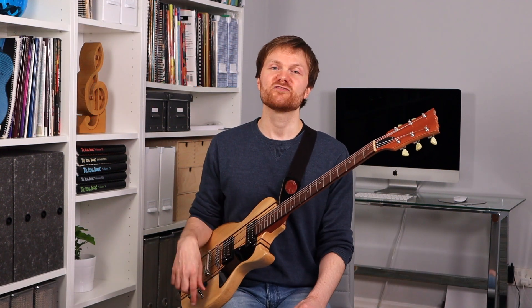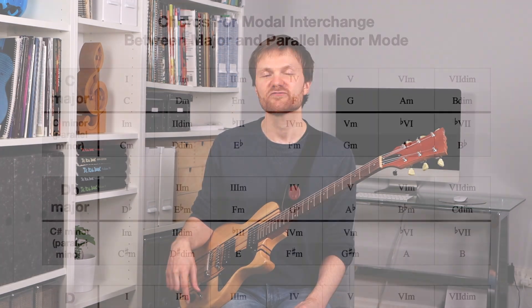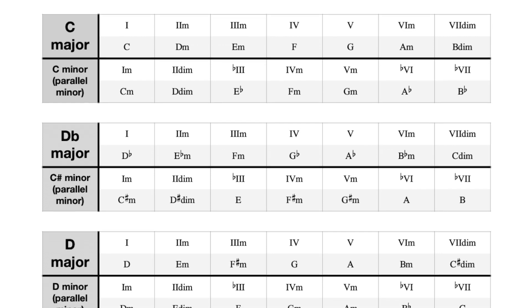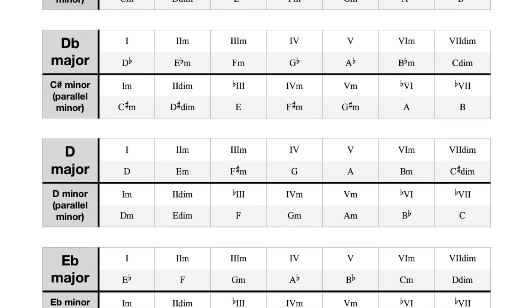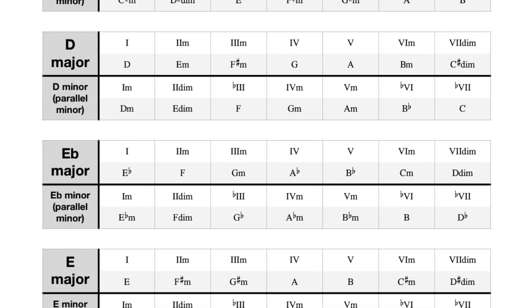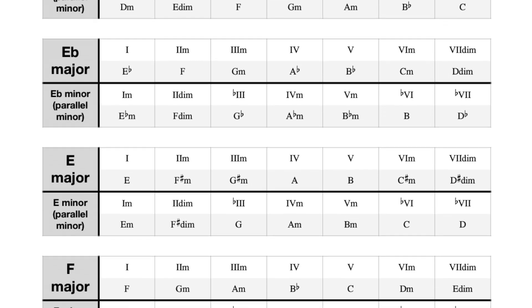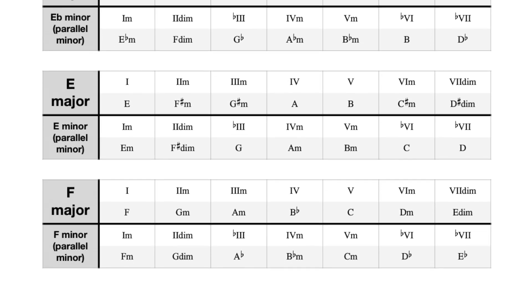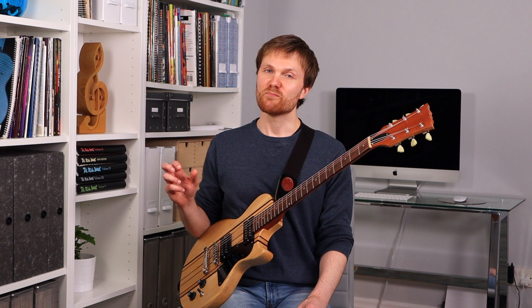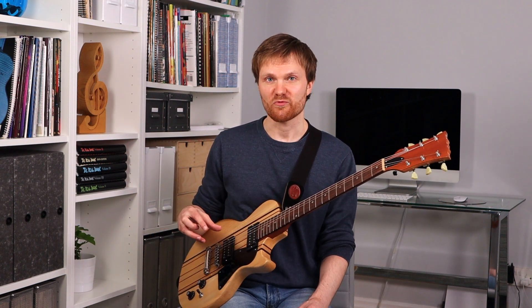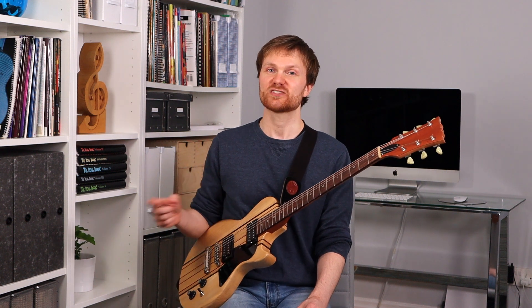There's a link in the description to a PDF that has all the major keys written out alongside their parallel minor modes, so you can experiment with writing your own chord progressions using modal interchange. Just remember that modal interchange only happens when you borrow chords from a parallel mode. If you take those chords and use them without returning to the original key, that's going to be a key change or modulation instead.